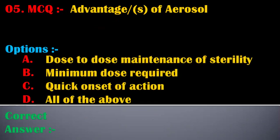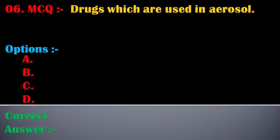The fifth MCQ is: advantages of aerosol — options are: A) dose-to-dose maintenance of sterility, B) minimum dose required, C) quick onset of action, D) all of the above. The correct answer is D, all of the above. The advantages of aerosols are dose-to-dose maintenance of sterility, minimum dose required, and quick onset of action.